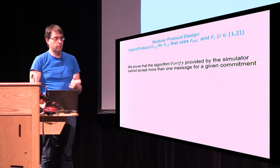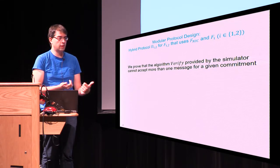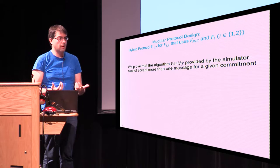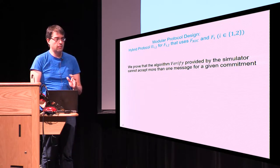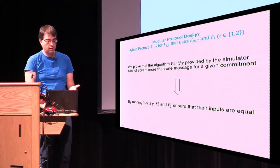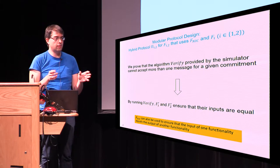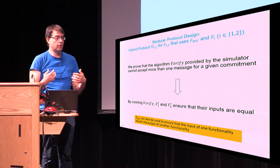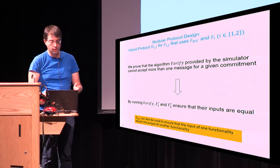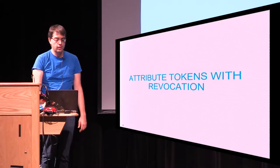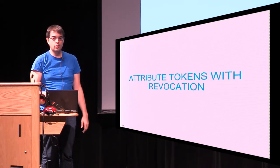In the paper, we prove that running the verify algorithm — provided by the ideal adversary to the FNIC functionality — always ensures the binding property so the input is always the same. We prove that running the verify algorithm will never accept two different messages for the same commitment, ensuring the inputs are equal. This same idea can also be used in different ways — for example, ensuring that the output of one functionality equals the input of another. In the second part of the talk, I will describe briefly how we use this idea to design modularly a protocol for attribute tokens with revocation.